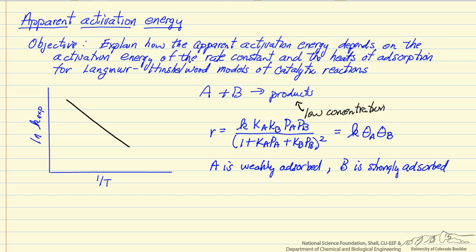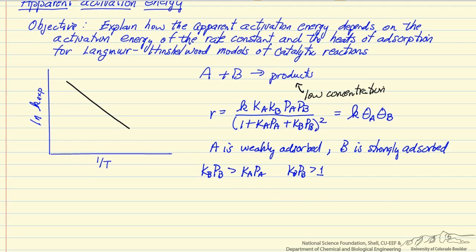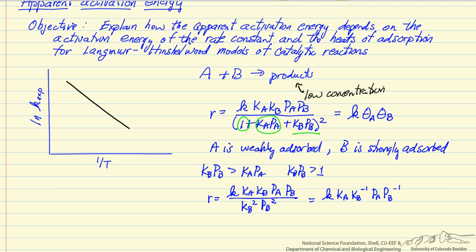This means we're assuming K_B times the pressure of B is significantly greater than K_A times the pressure of A, and K_B times the pressure of B is also greater than 1, so we simplify the rate expression. The K_A and K_B·P_A terms are small in the denominator, so the denominator just becomes K_B squared times pressure of B squared, which simplifies the rate to the form shown here.